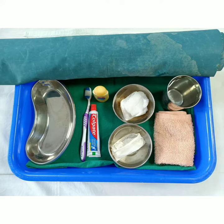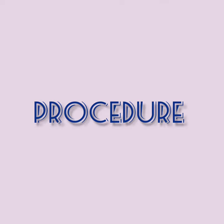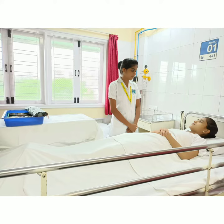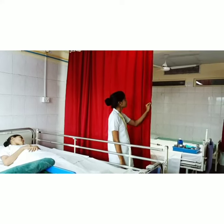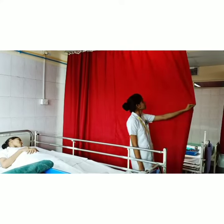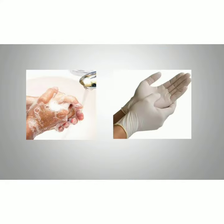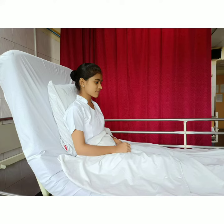Kidney tray. Procedure: assess the condition of the patient, his mouth, and level of consciousness. Inspect the integrity of the oral cavity. Pull the screen, wash hands, and don gloves. Position the patient in high Fowler's or semi-Fowler's position as tolerated.